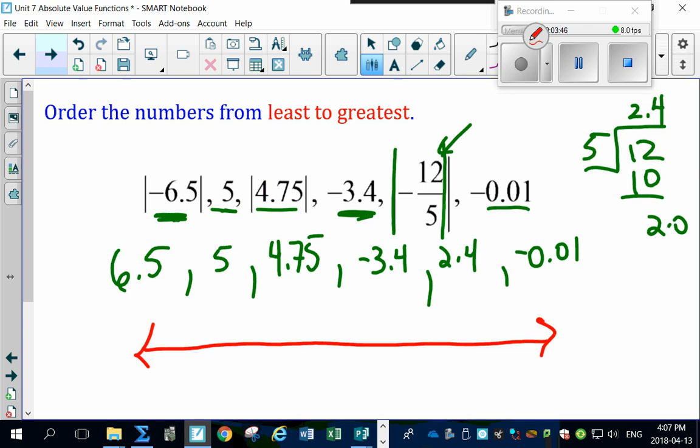So first things first. Where's 6.5? Well, 6.5 is way out here. Okay. And that's your biggest number. Then comes 5, which is going to be here. Then comes 4.75, which is probably going to be close to 5, right about here. 4.75. There it is. Very pretty. Okay. Then probably 2.4 is next, which looks like about here.